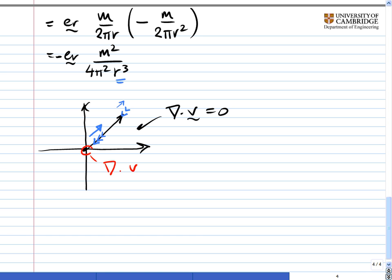at the origin. Div v is not equal to 0 at the origin.